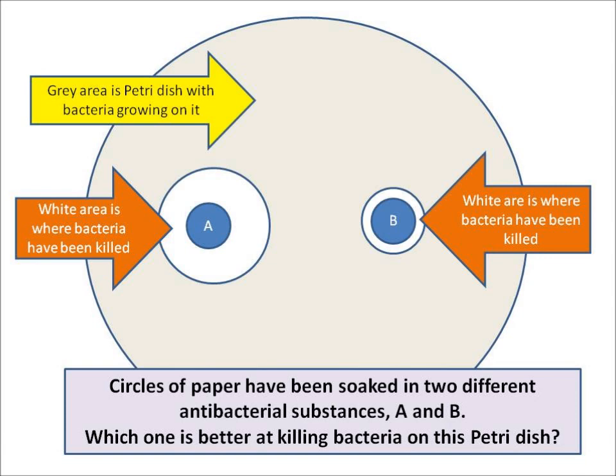This is an experiment about which antibacterial substance is the best. The grey area is a petri dish with lots of bacteria growing on it. Two spots of paper have been placed in the petri dish, A and B. A was soaked in antibacterial substance A and B in substance B. Around A there's a bigger area where bacteria have been killed than around B, so A was a better antibacterial substance because it killed more bacteria.